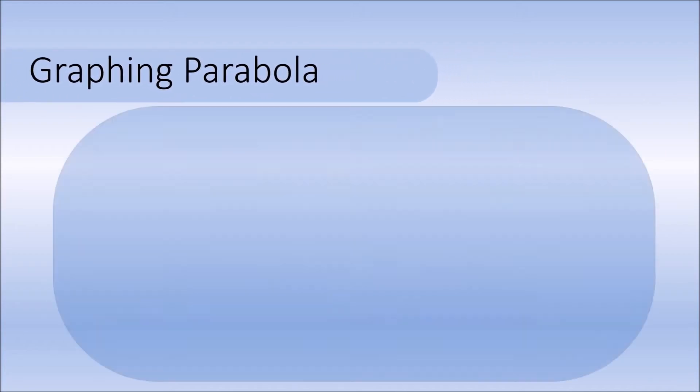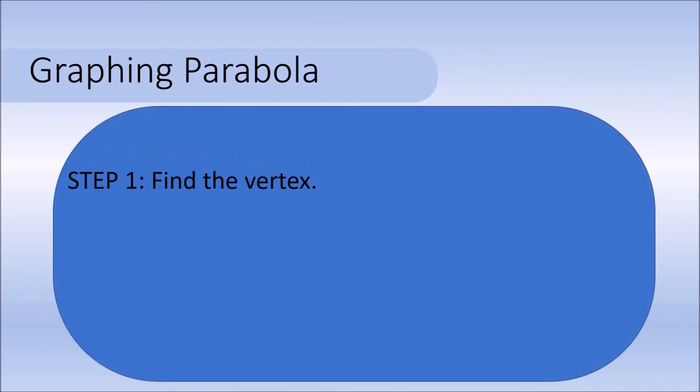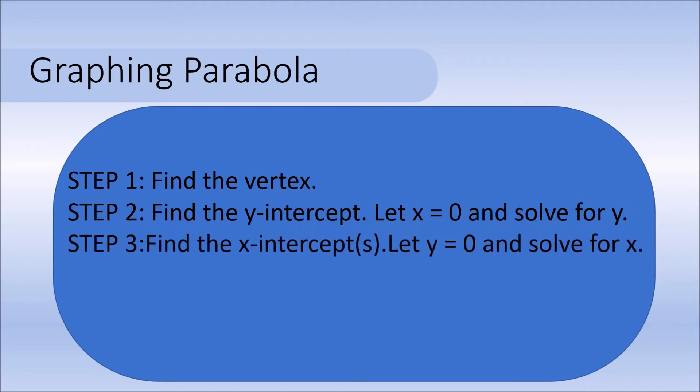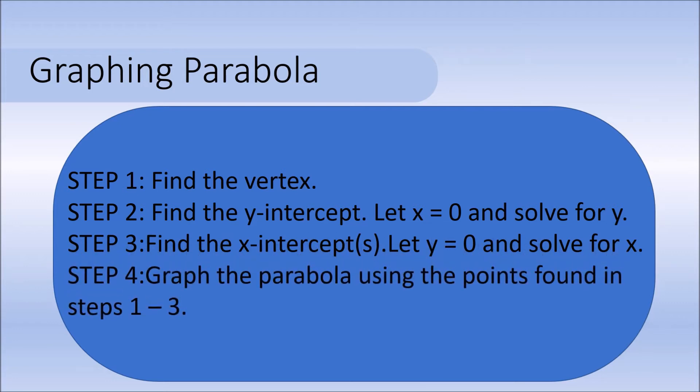In graphing the parabola, you must first find the vertex using the formula given before. Second, find its y-intercept by letting x equal 0 and then solve for y. Third, find its x-intercept by letting y equal 0 and solve for x. And finally, using the points found in steps 1 to 3, we can now graph the parabola.